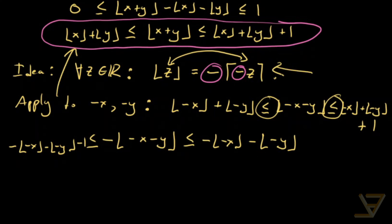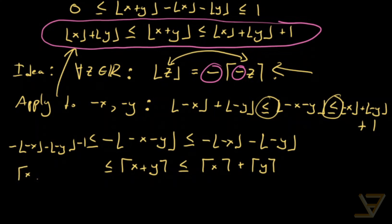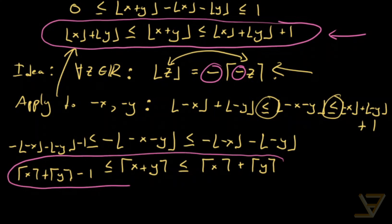Using the floor-ceiling identity, we get: the ceiling of x plus y is less than or equal to the ceiling of x plus the ceiling of y, and it's greater than or equal to the ceiling of x plus the ceiling of y minus one. Here we have our counterpart — not so much a formula as inequalities — and this is our counterpart for the ceiling function.